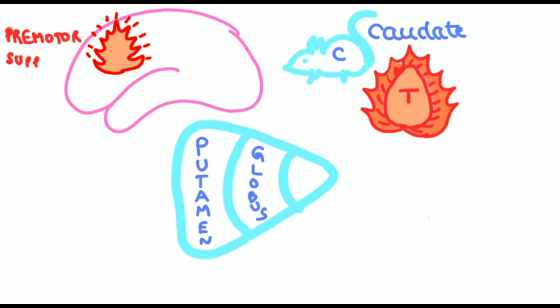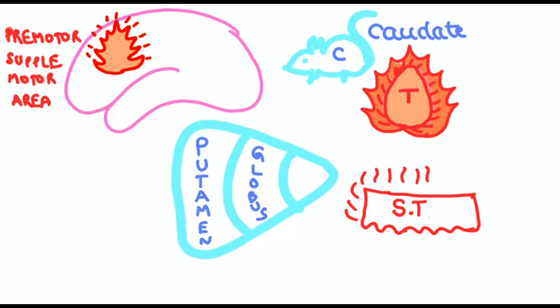This is the subthalamic nuclei which also secretes excitatory neurotransmitters. Now let's see the pathways between these centers and correlate to why these movement disorders happen.